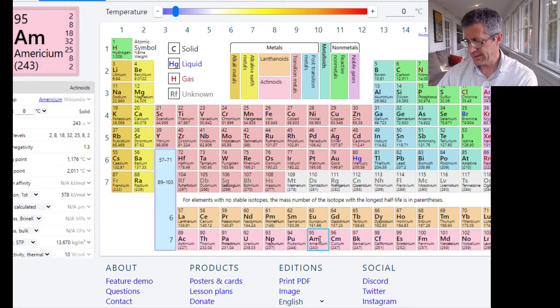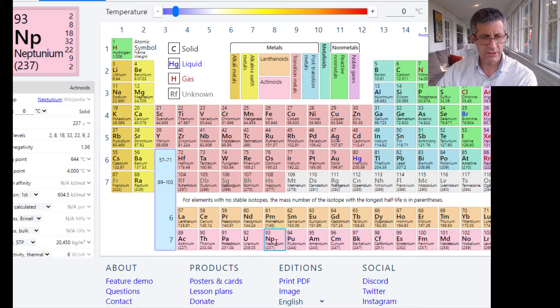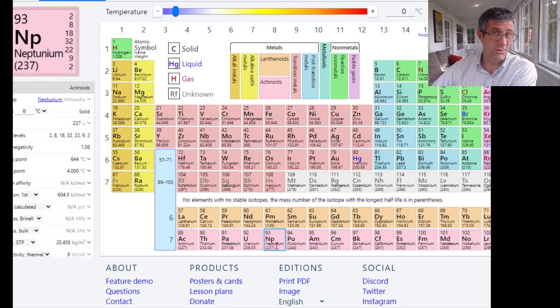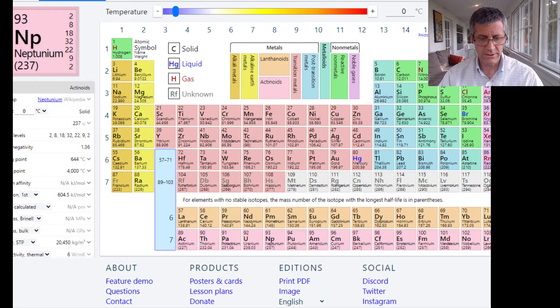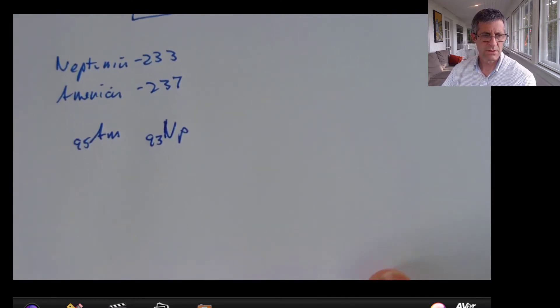So americium is 95. It has symbol of AM. And Neptunium is going to be nearby. So there it is, Neptunium 93. Notice the parentheses around the mass there. That means it's unstable, so it's radioactive. Neptunium is NP and it has an atomic number of 93, it has 93 protons. All right, let's write it out.